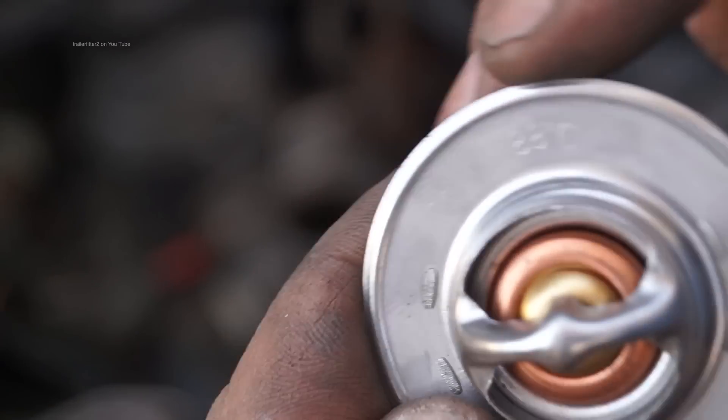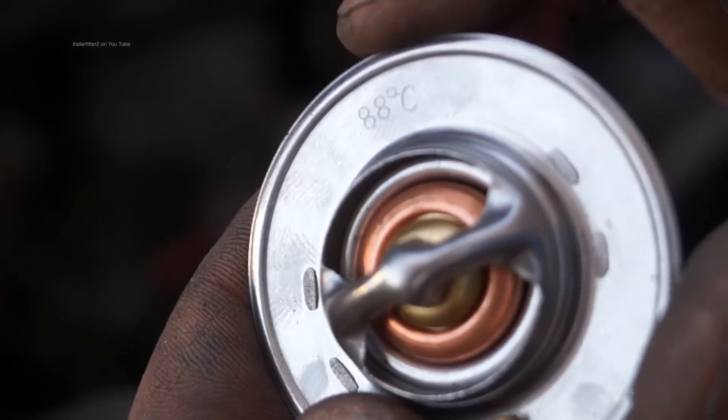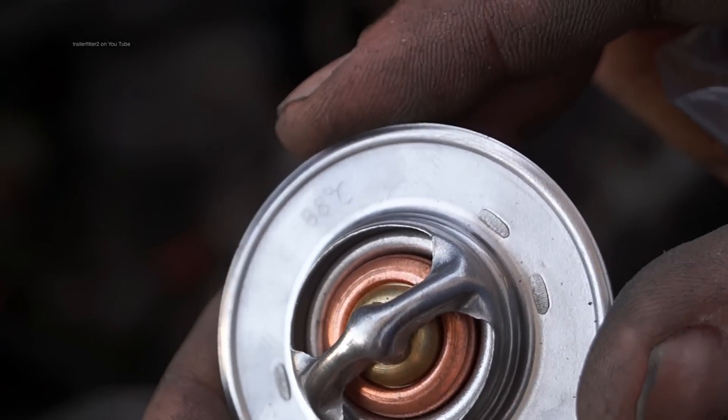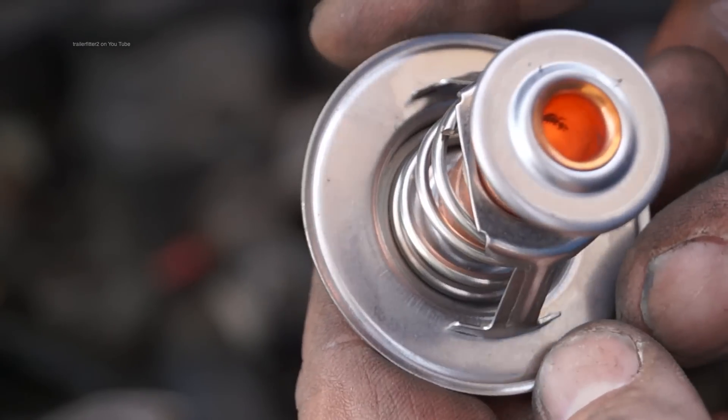So what we're going to do is with our thermostat, you'll usually see a rating on the top of it, 88 degrees C. So that's a rated thermostat for the 300 TDI engine.